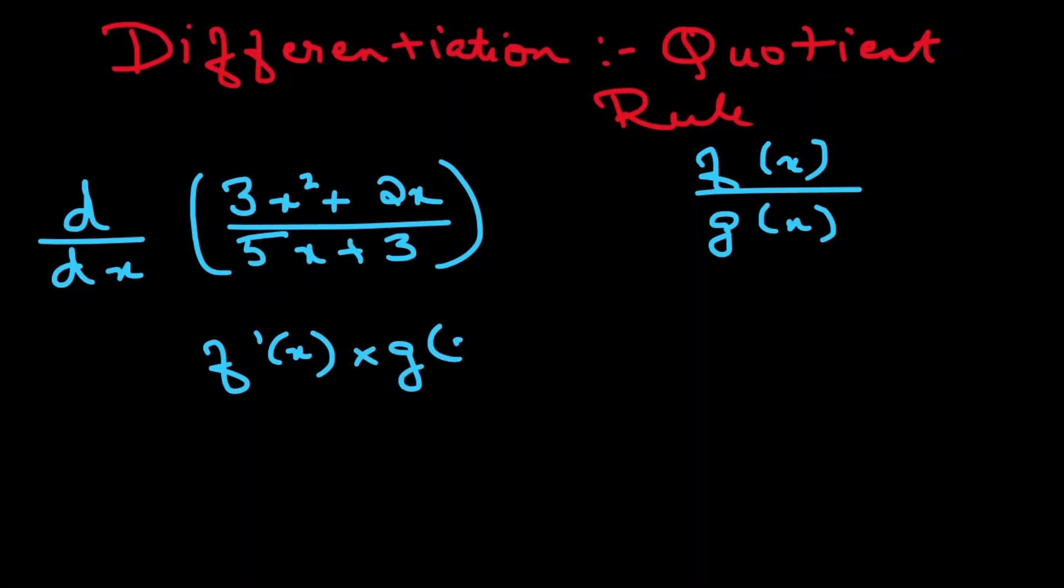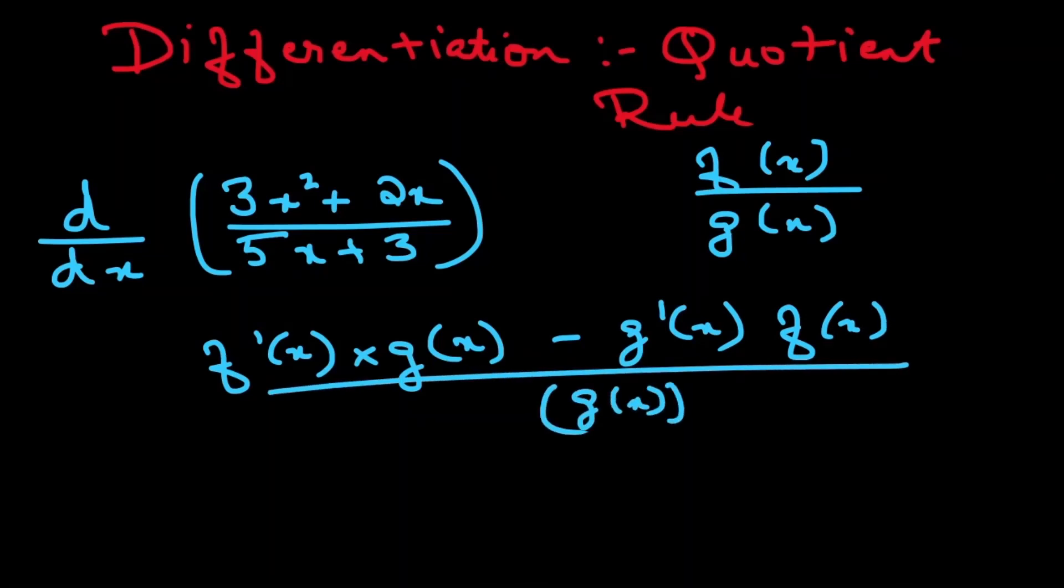Then we multiply it with the denominator, which is the g(x) function, and then we subtract the denominator's differentiation, which is g'(x), and then we multiply it with f(x). And then the denominator of this is going to be [g(x)]².